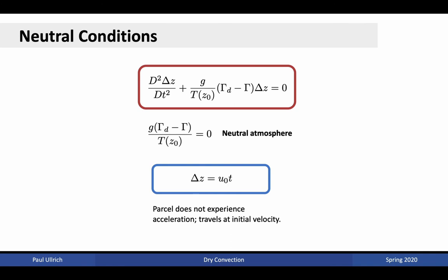Neutral conditions are a special case where the background environmental lapse rate matches the dry adiabatic lapse rate. In this case, the second term in the differential equation is zero. Solving for this, the displacement grows linearly: delta z equals initial velocity u0 times time t. The fluid parcel either rises or sinks linearly with time — it does not experience acceleration but maintains its initial velocity. This arises because if a parcel has an initial upward velocity, it maintains that velocity in this neutral environment.